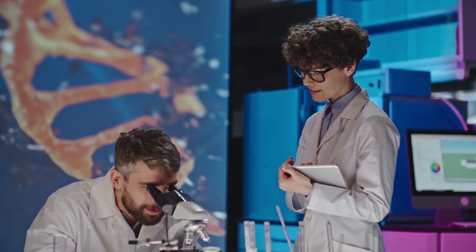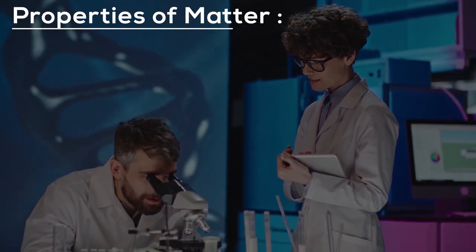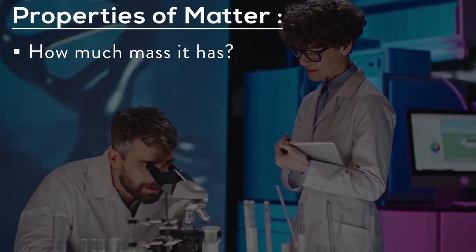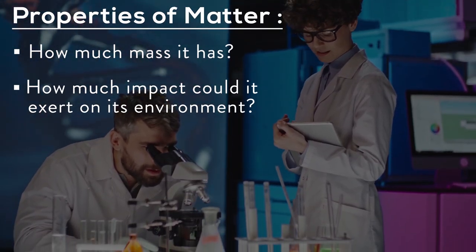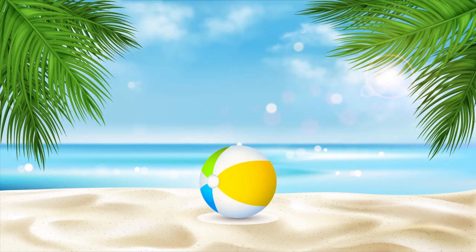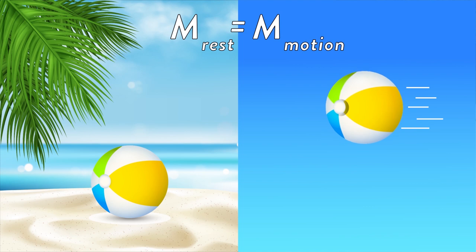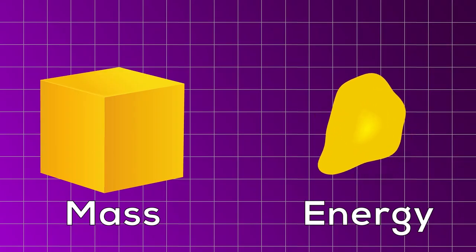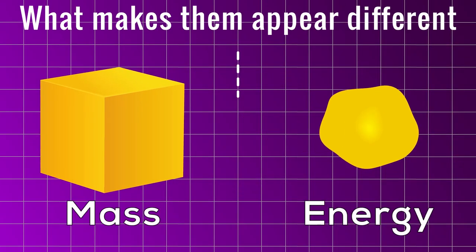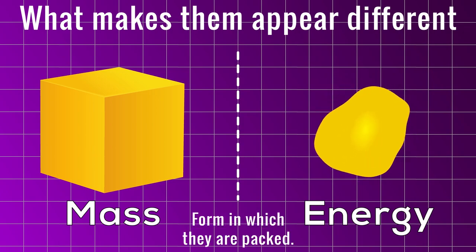Before E is equal to mc², scientists used to relate matter with two properties: how much mass it has, and how much impact it could exert on its environment. They used to think that a ball at rest has the same mass as a ball moving at 100 miles per hour. The main difference was that the speeding ball has more energy than the resting one, which had no energy. But after Einstein's discovery, they realized that their theory had a major flaw — scientists came to know that mass and energy are the same basic stuff, and what makes them appear different is the form in which they are packed.